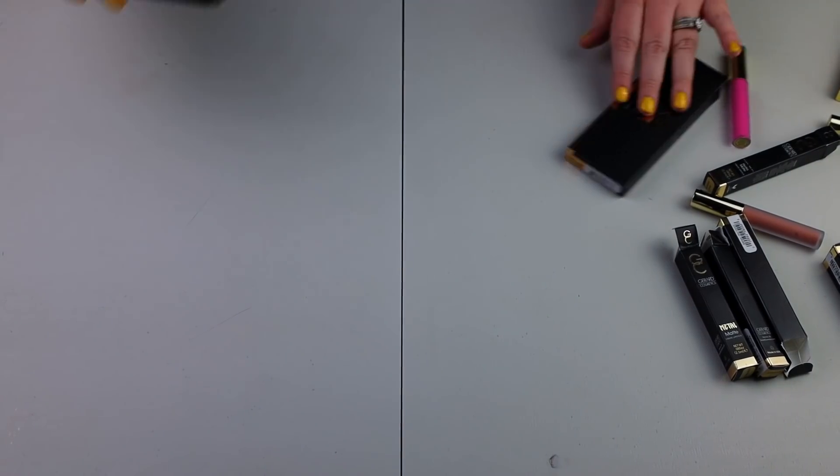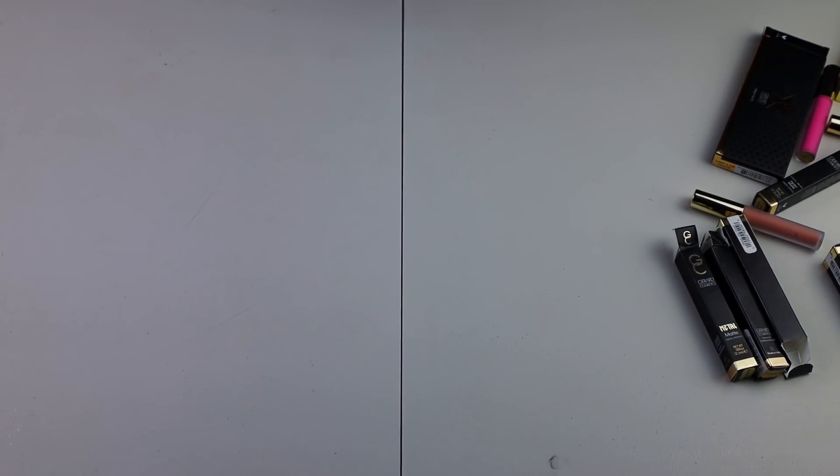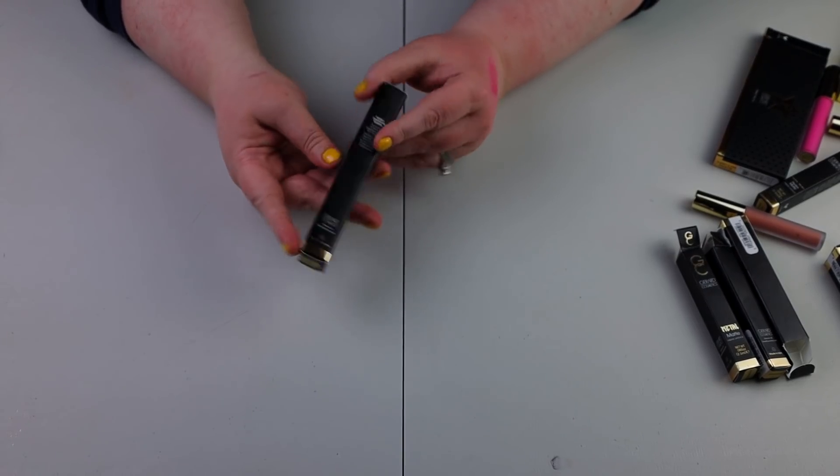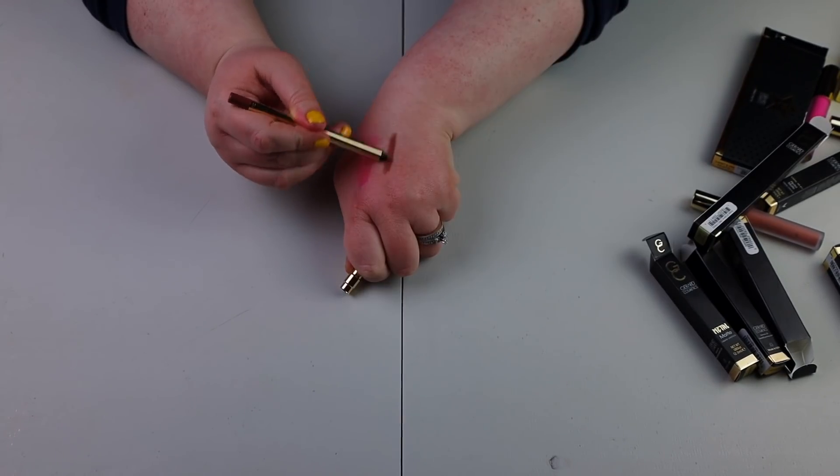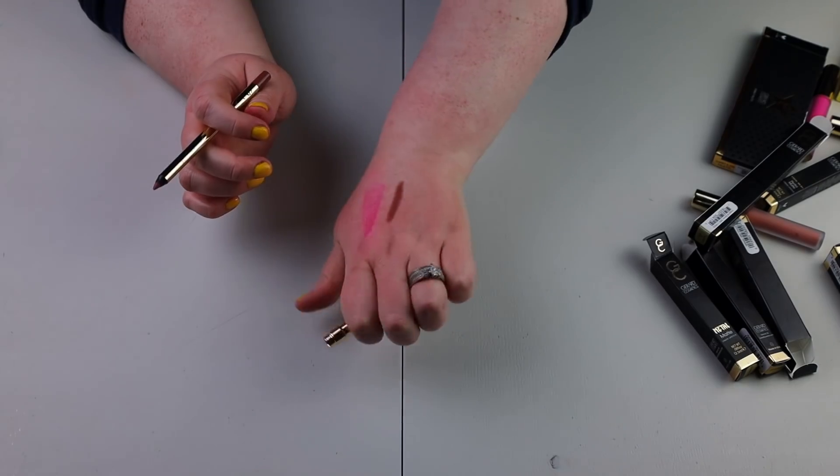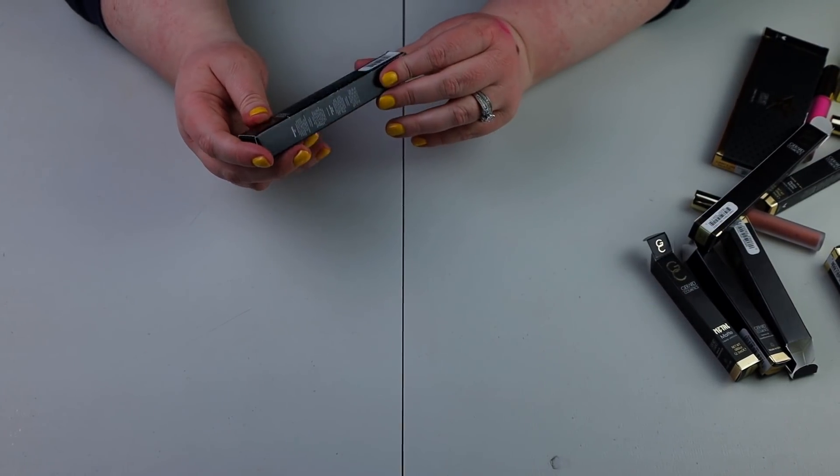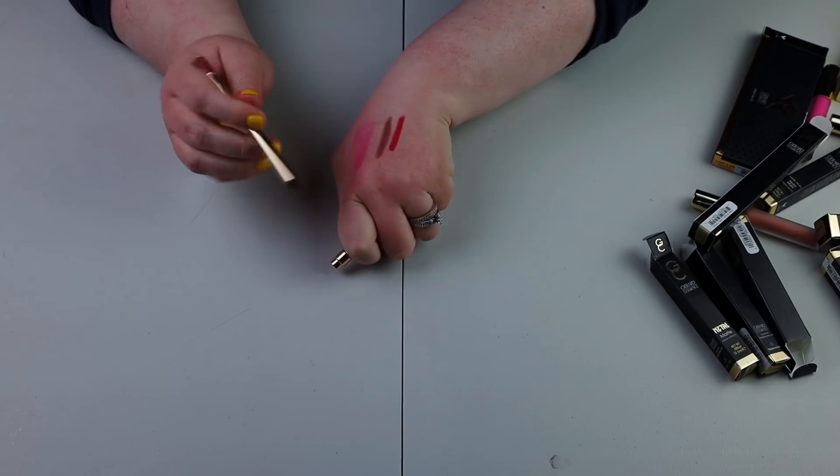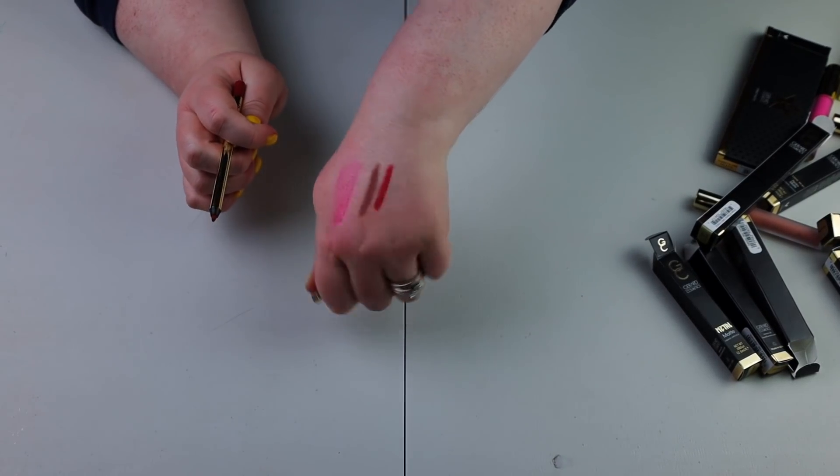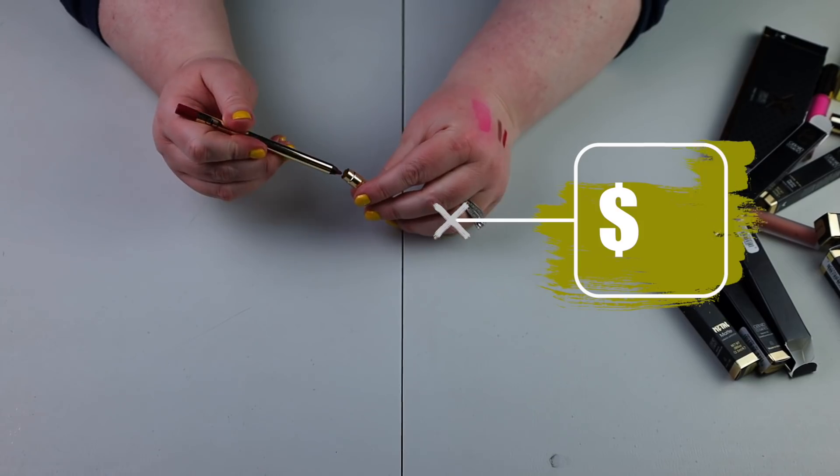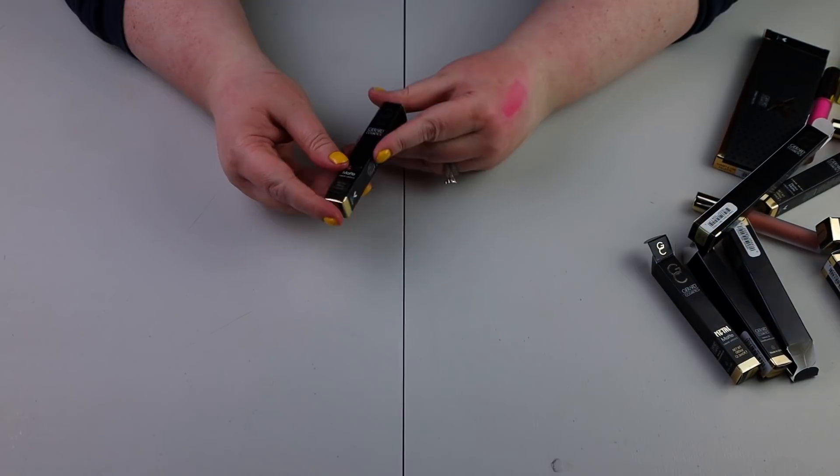All right. We have three more products left. First one is a lip pencil in the shade sugar and spice. It's a beautiful color. It feels very creamy. We love that. Love the component. And then we have one more shade in immortal. Oh, a nice whore red color. We love that.